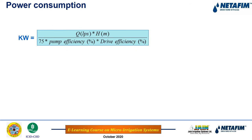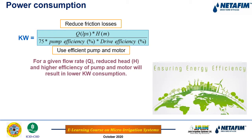For cost-effective design, reduce frictional head losses and use an efficient pumping system. Energy charges are calculated as: power (HP) = (flow in liters/second × head) ÷ (75 × pump efficiency × drive efficiency), then multiplied by the unit rate of power charges.